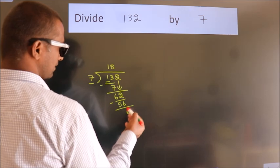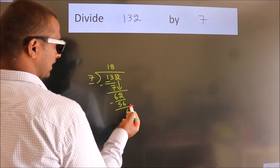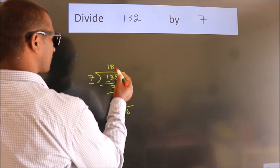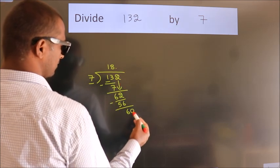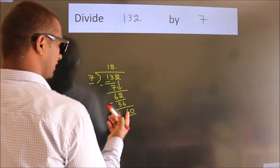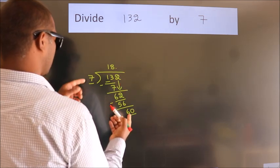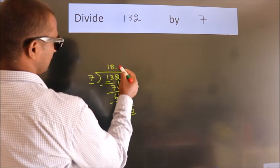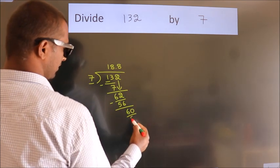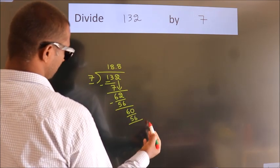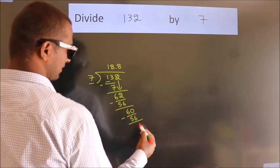After this, no more numbers to bring it down. So what we do is, we put dot, take 0. So 60. A number close to 60 in the 7 table is 7 times 8 equals 56. Now we subtract. We get 4.